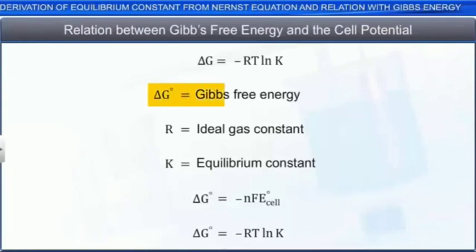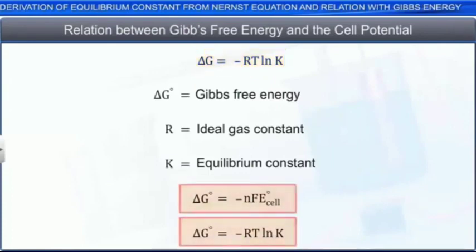You already know that the Gibbs free energy is related to the equilibrium constant by the expression delta G is equal to minus R T L N K. With these equations, you can easily calculate the equilibrium constant and the Gibbs free energy for a given electrochemical cell.